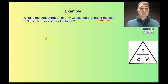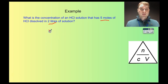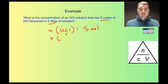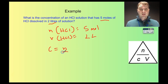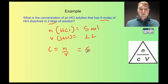I'm going to underline the 5 moles and the 2 litres because those are the important bits of information. First step: write out what I know. My number of moles of hydrochloric acid is 5 moles, and my volume of solution is 2 litres. Now I write my equation: C equals N on V. Substituting in my numbers, that's 5 moles divided by 2 litres, which gives us 2.5 moles per litre.